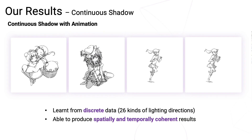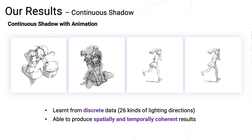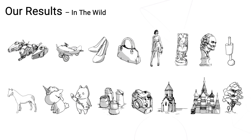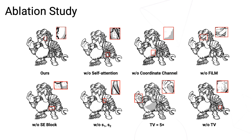Despite the network being trained on 26 kinds of discrete lighting directions, it can produce continuous shadows. There are more testing results in the wild across a wide range of line drawing styles. From the ablation study, we can see that without the proposed modules in our network, the results will either have inconsistency, acne artifacts, or unrealistic shadows.